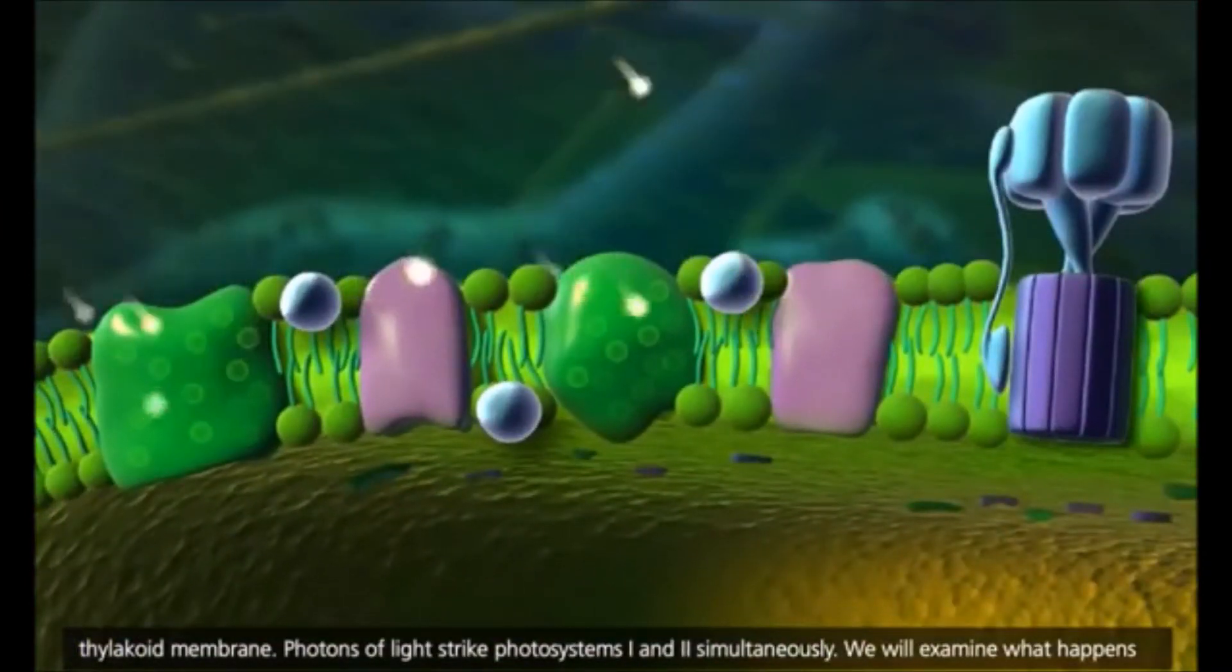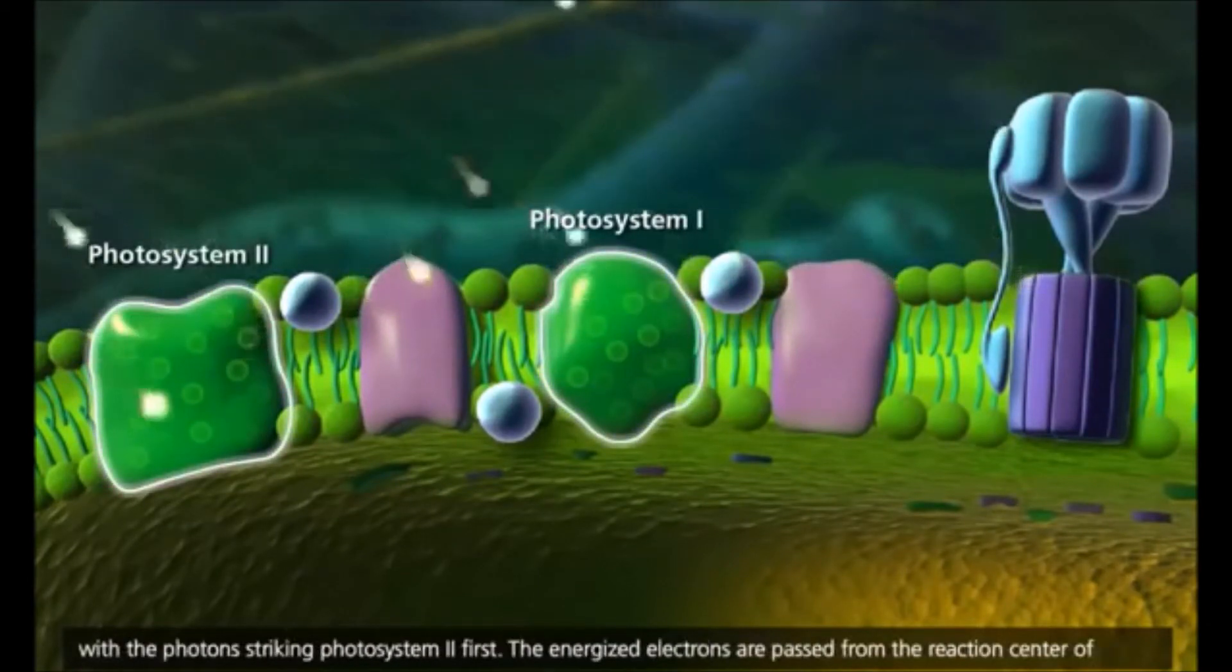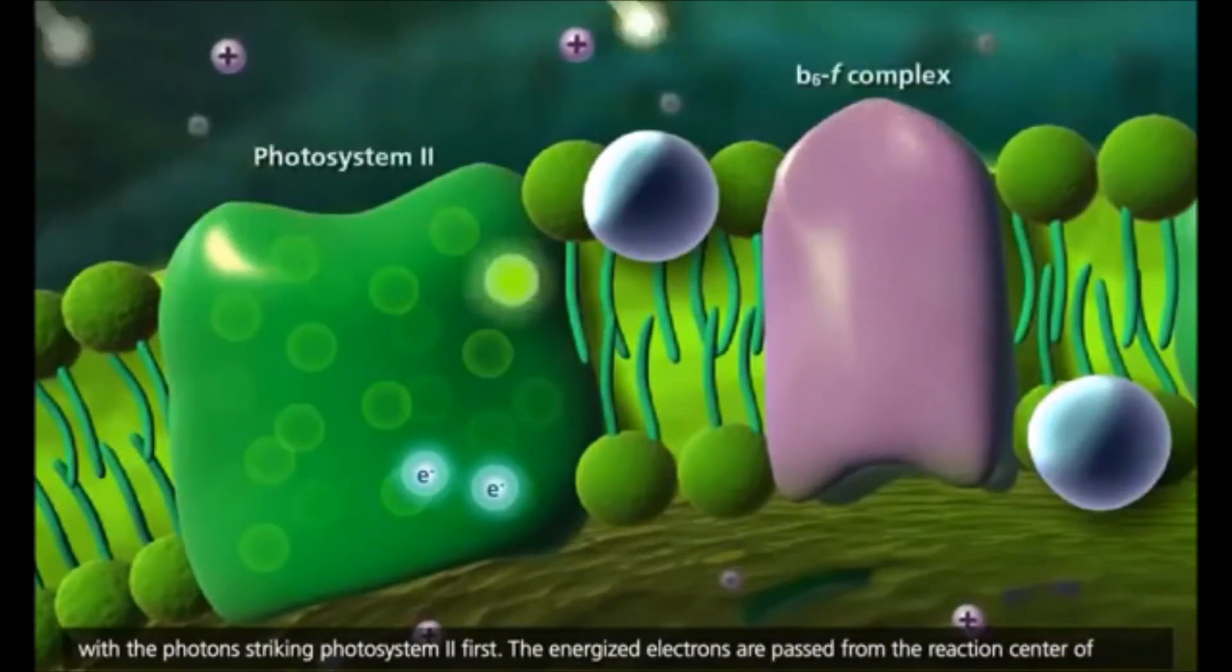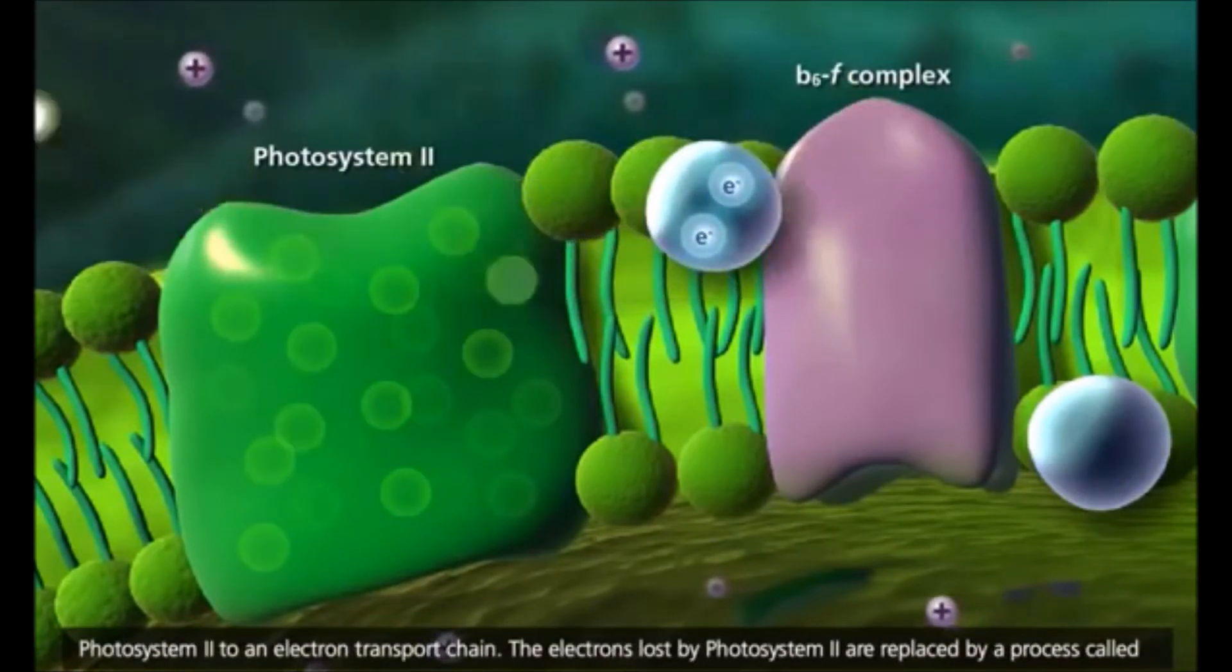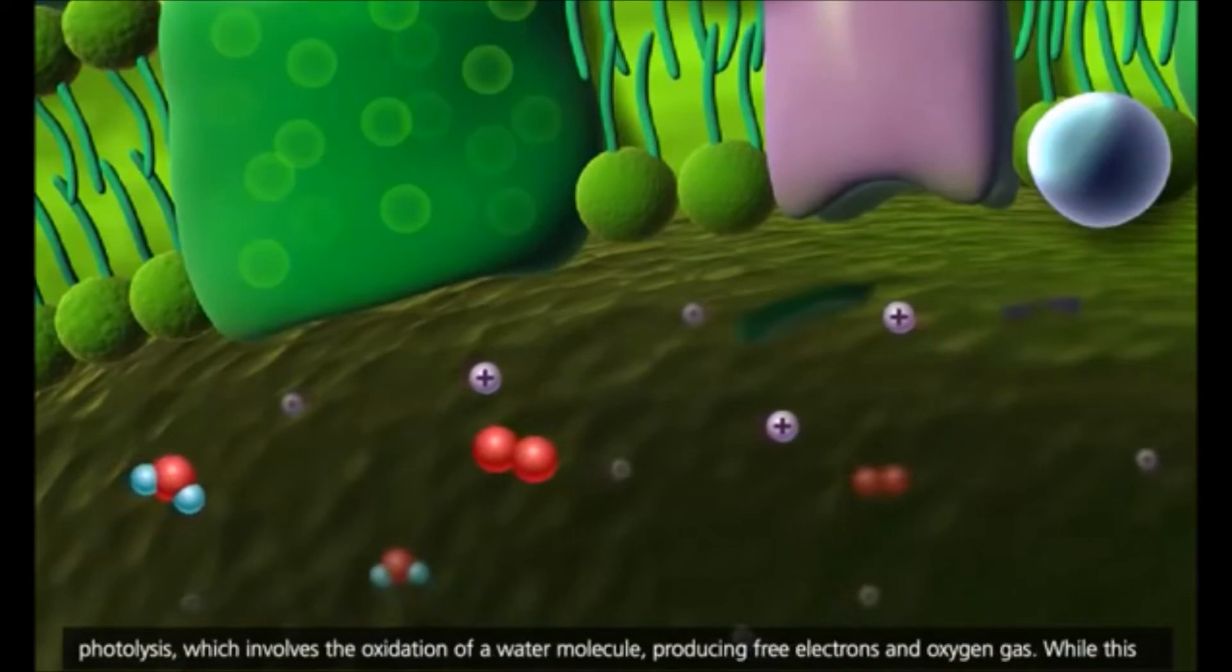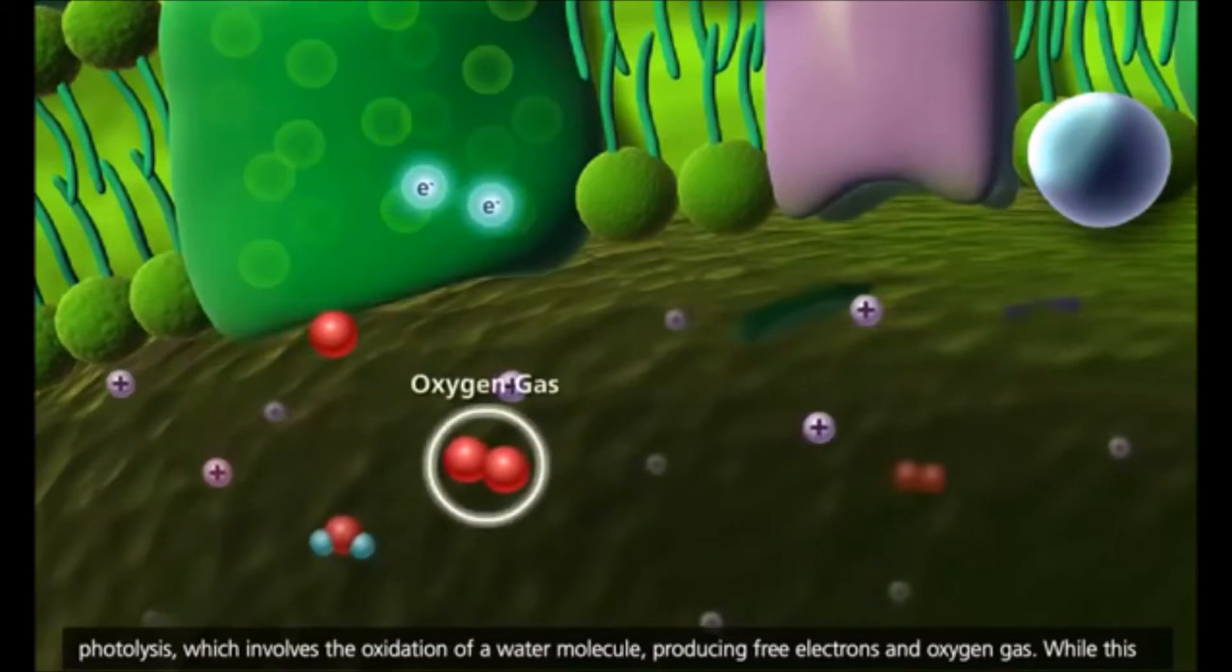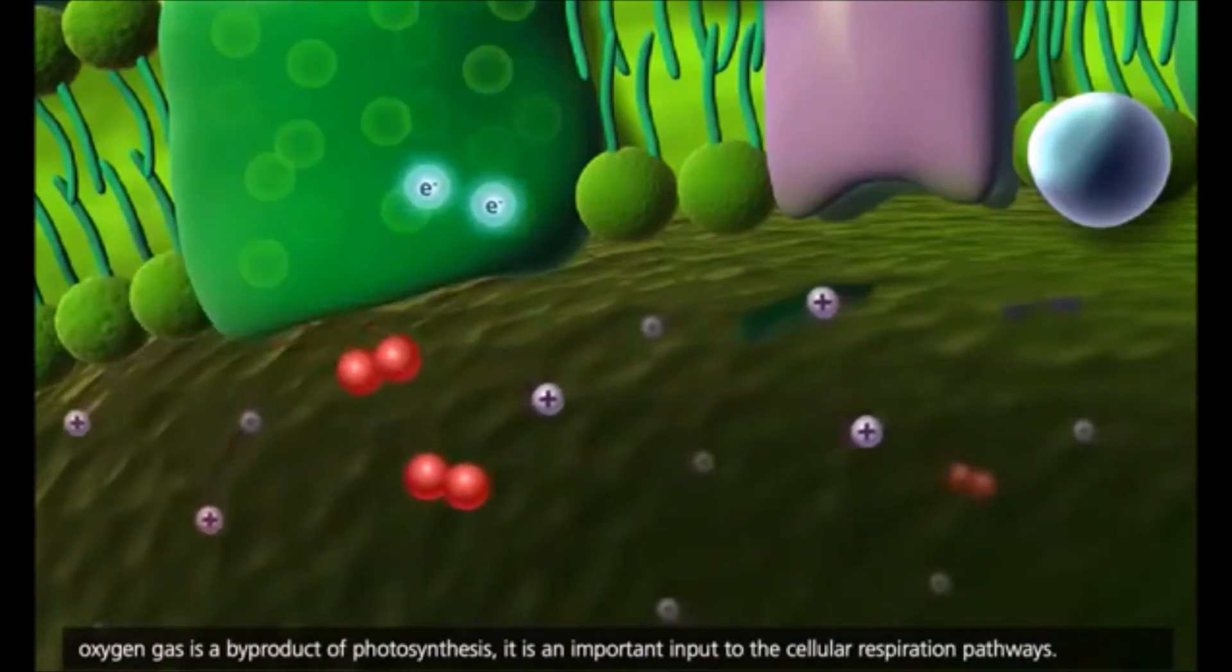Photons of light strike photosystem-1 and photosystem-2 simultaneously. We will examine what happens with the photons striking photosystem-2 first. The energized electrons are passed from the reaction center of photosystem-2 to an electron transport chain. The electrons lost by photosystem-2 are replaced by a process called photolysis, which involves the oxidation of a water molecule producing free electrons and oxygen gas. While this oxygen gas is a byproduct of photosynthesis, it is an important input to the cellular respiration pathways.